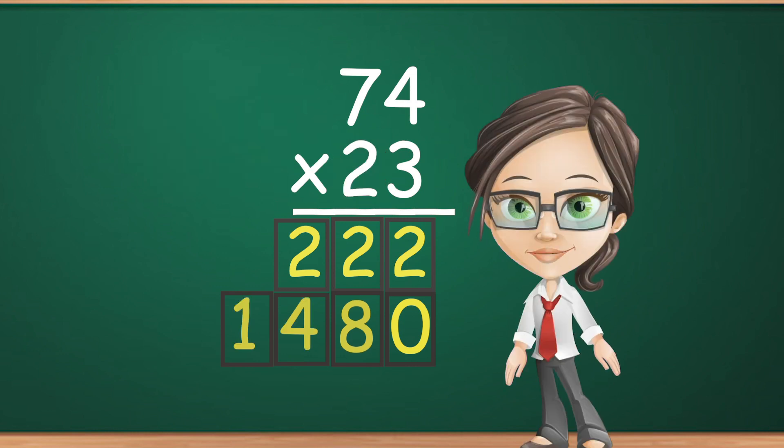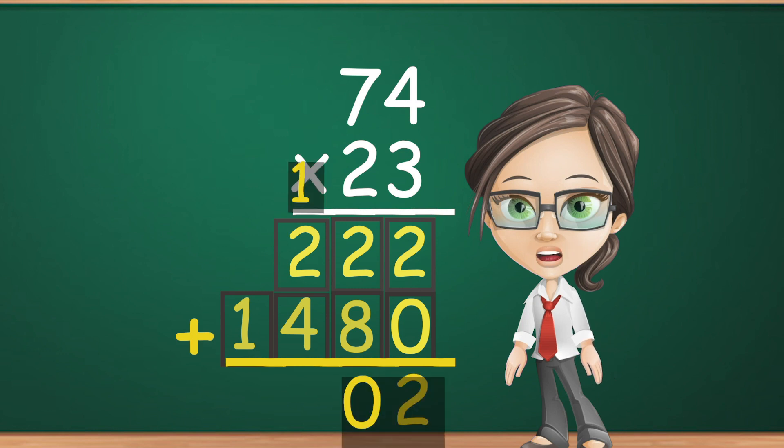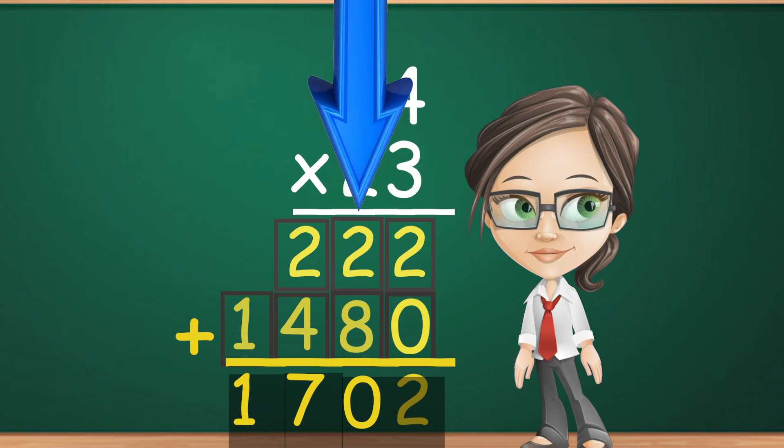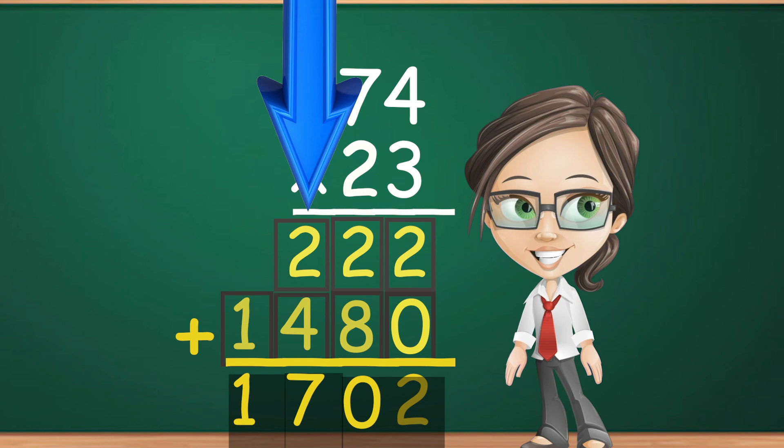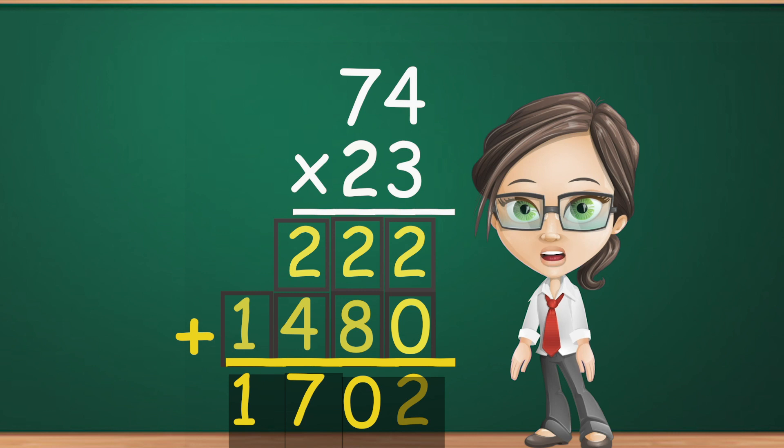The last step to multiplying two-digit numbers is to add all the numbers together. Make sure that all the ones, tens, and hundreds are lined up neatly so that you are sure that your math is added correctly. Voila! Now you know how to multiply two-digit numbers.